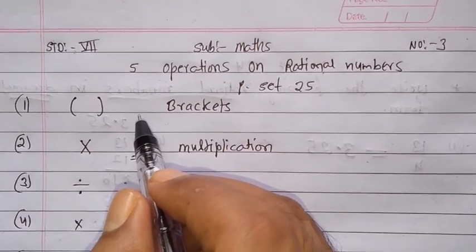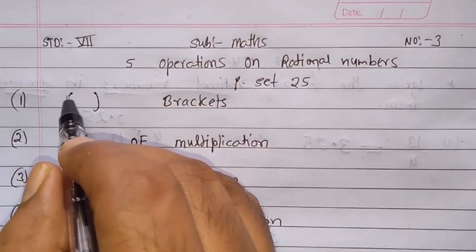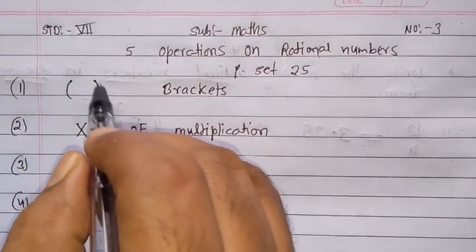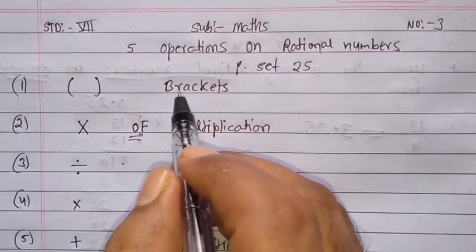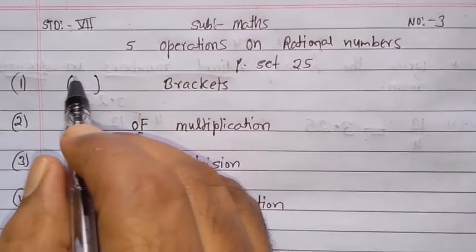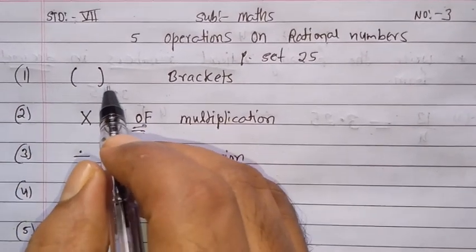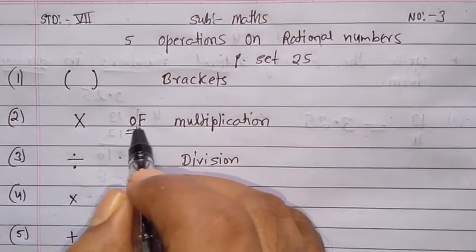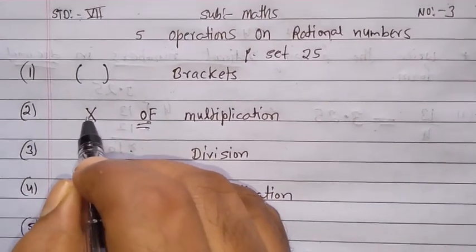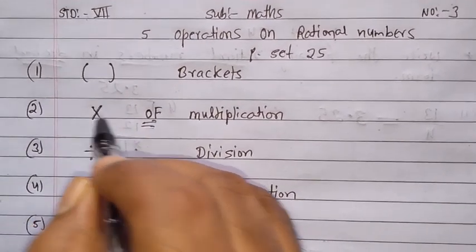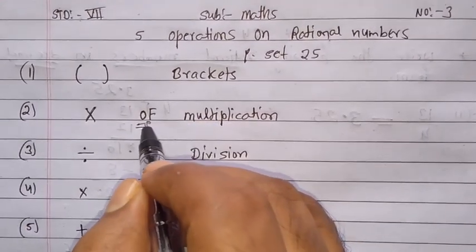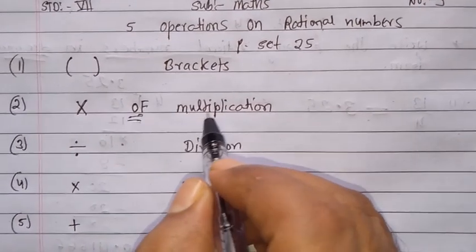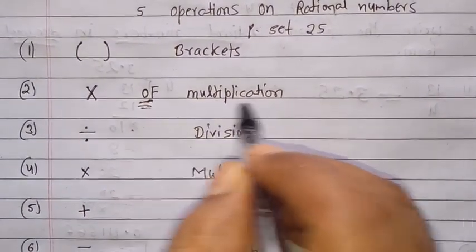Let me first discuss the concept. First, if any type of operation is there, we first try to solve the brackets — whatever brackets are given, we solve inside the bracket first. Next, if 'of' is there in the statement, that means we multiply. After brackets, we try to solve 'of', which is known as multiplication.